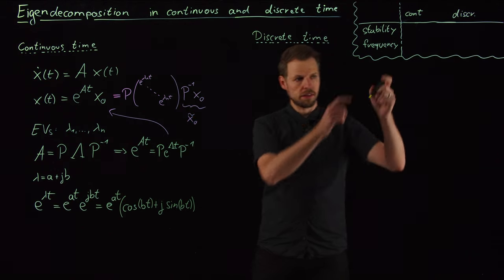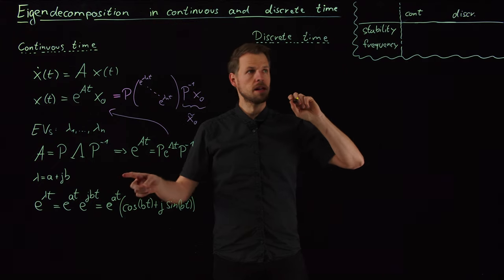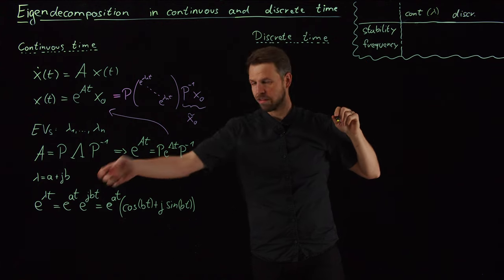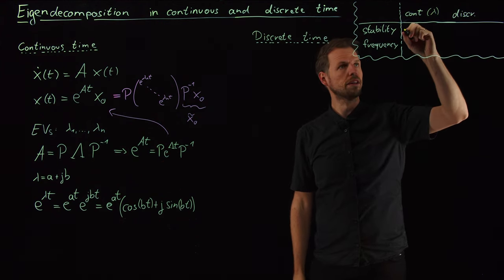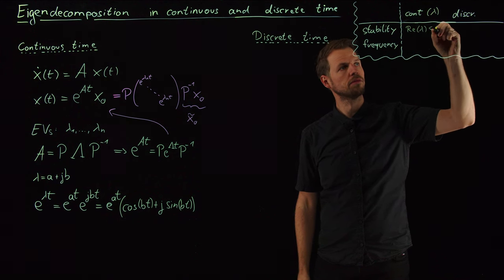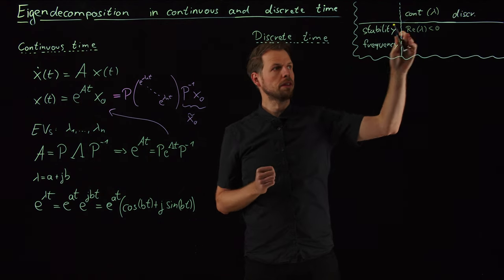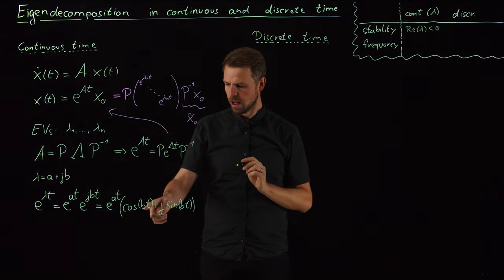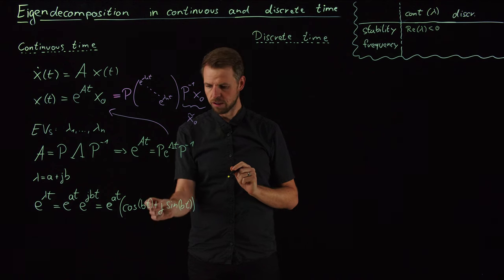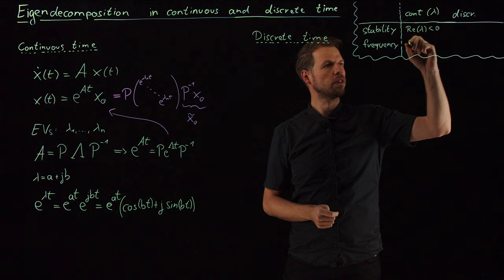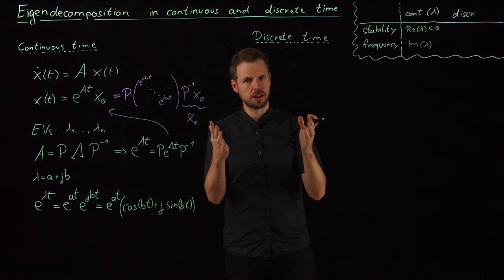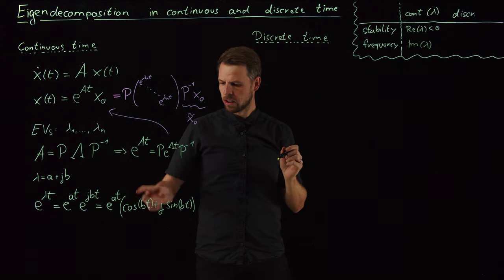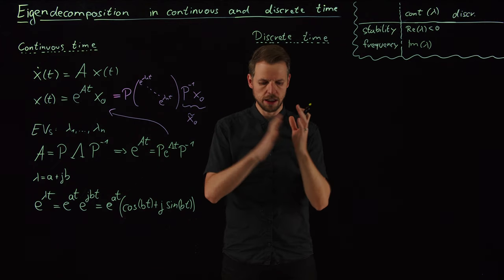We saw that in continuous time, stability is determined by the real part of the eigenvalue. So in continuous time, for eigenvalue lambda, stability requires the real part of lambda to be negative for all lambdas. As soon as one eigenvalue has real part zero, we have marginal stability; if one is positive, the system is unstable. The frequency is determined by the imaginary part of lambda — if it's a real number, there are no oscillations; if there's a non-zero imaginary part, we get oscillations.